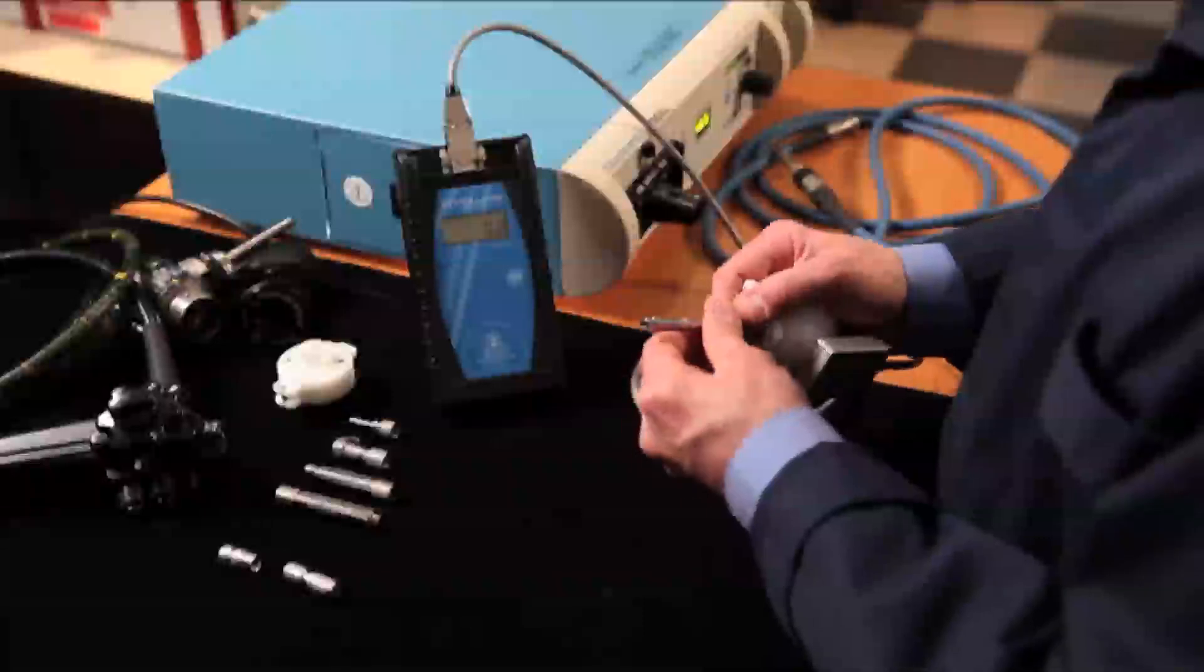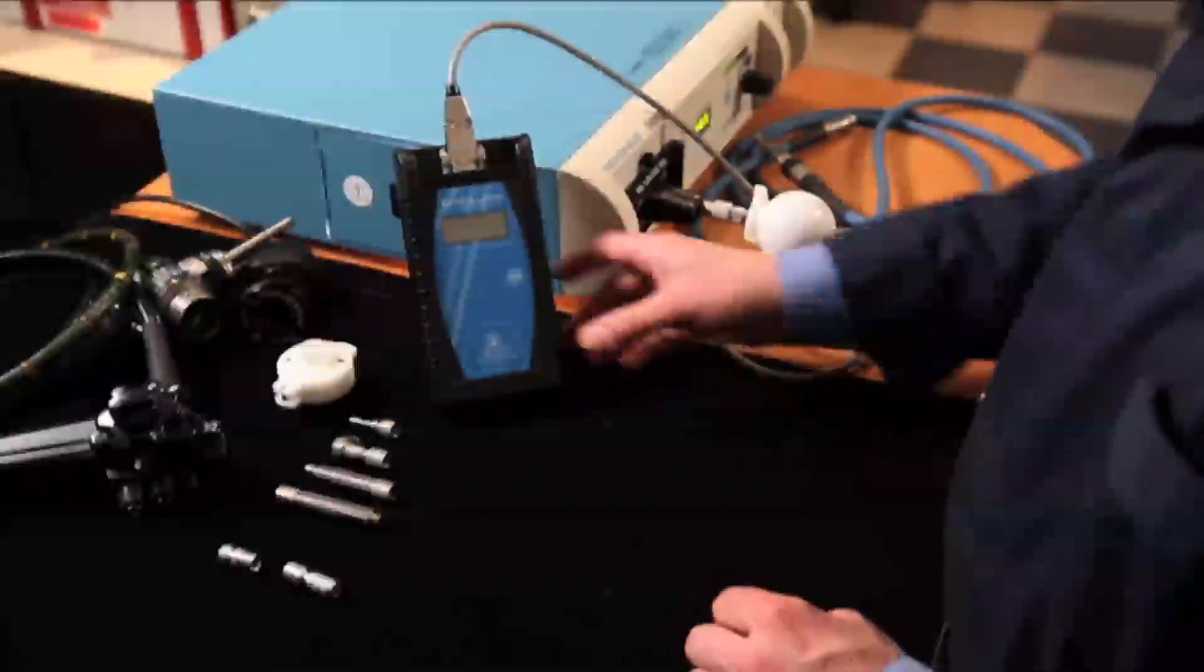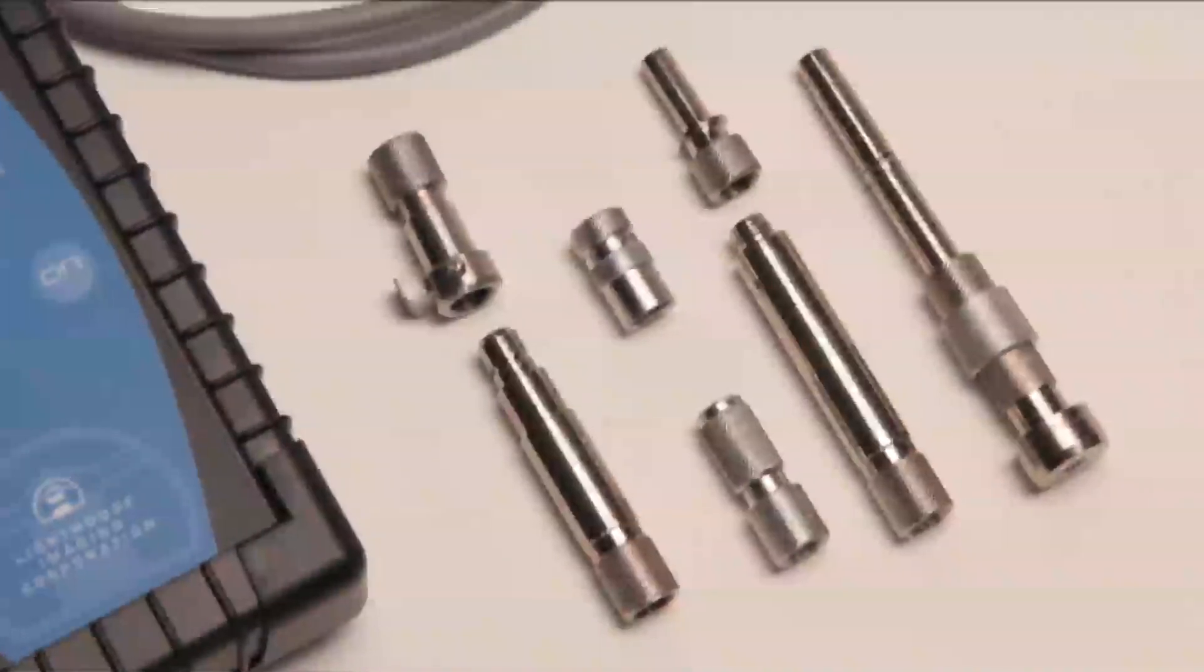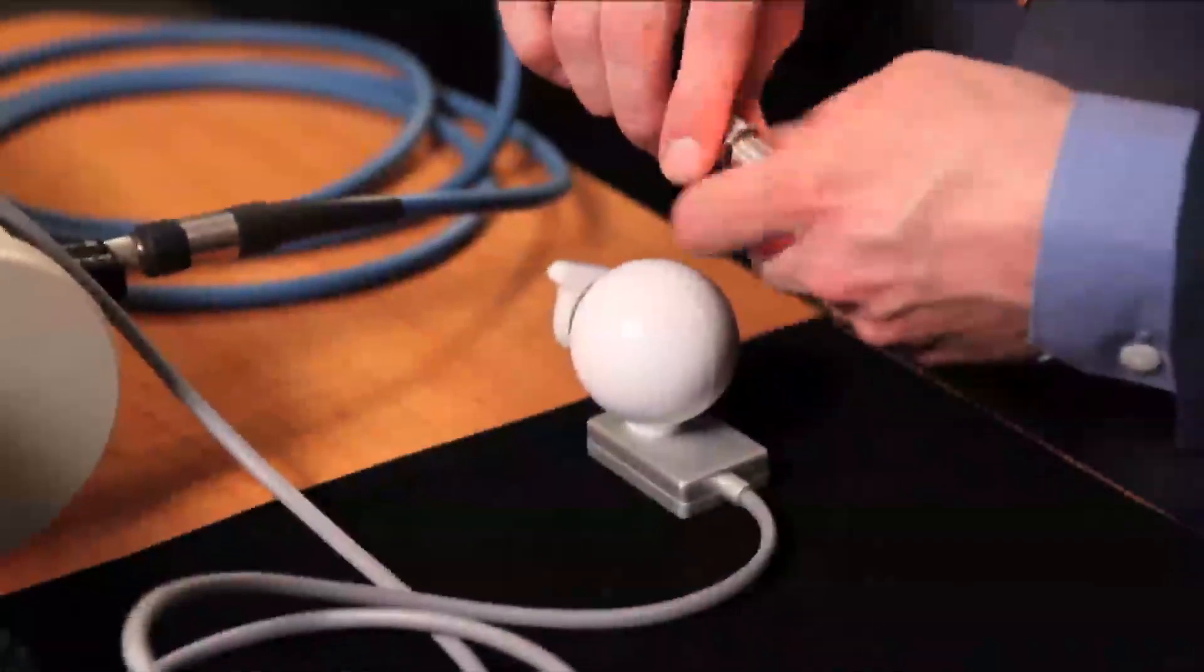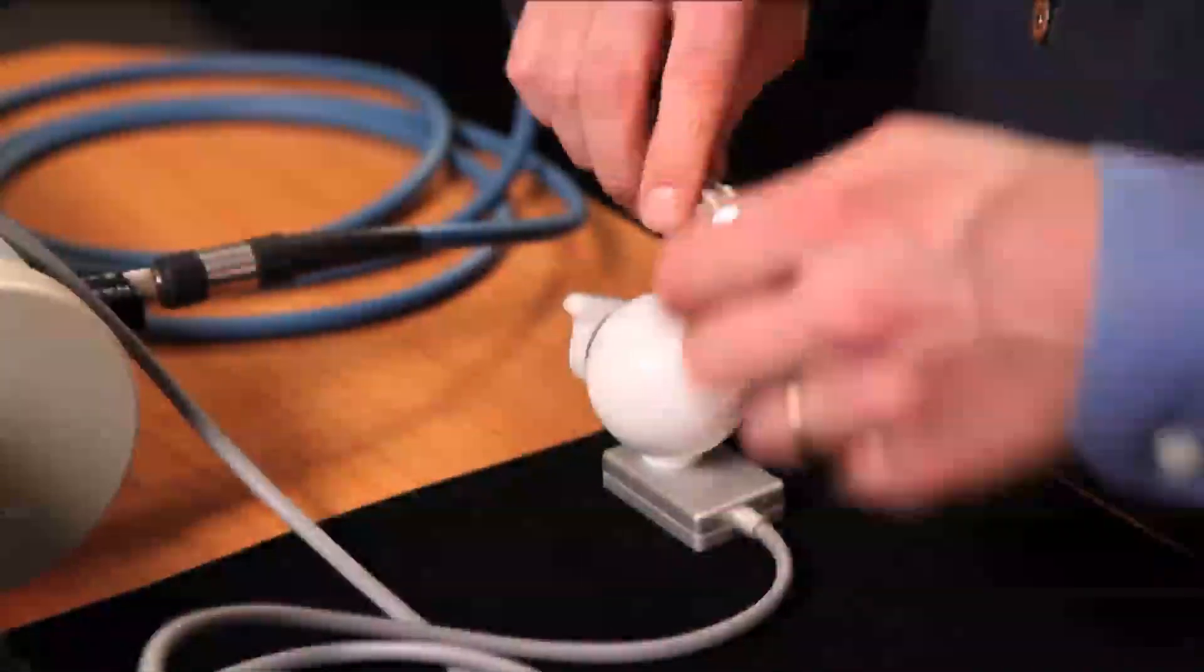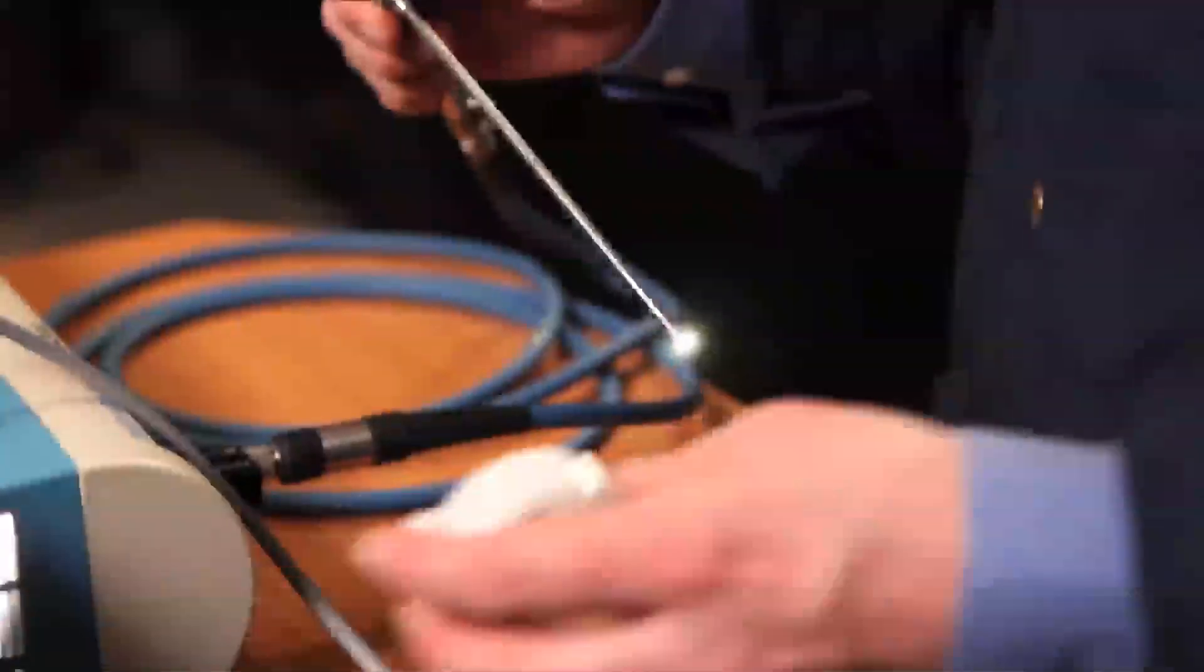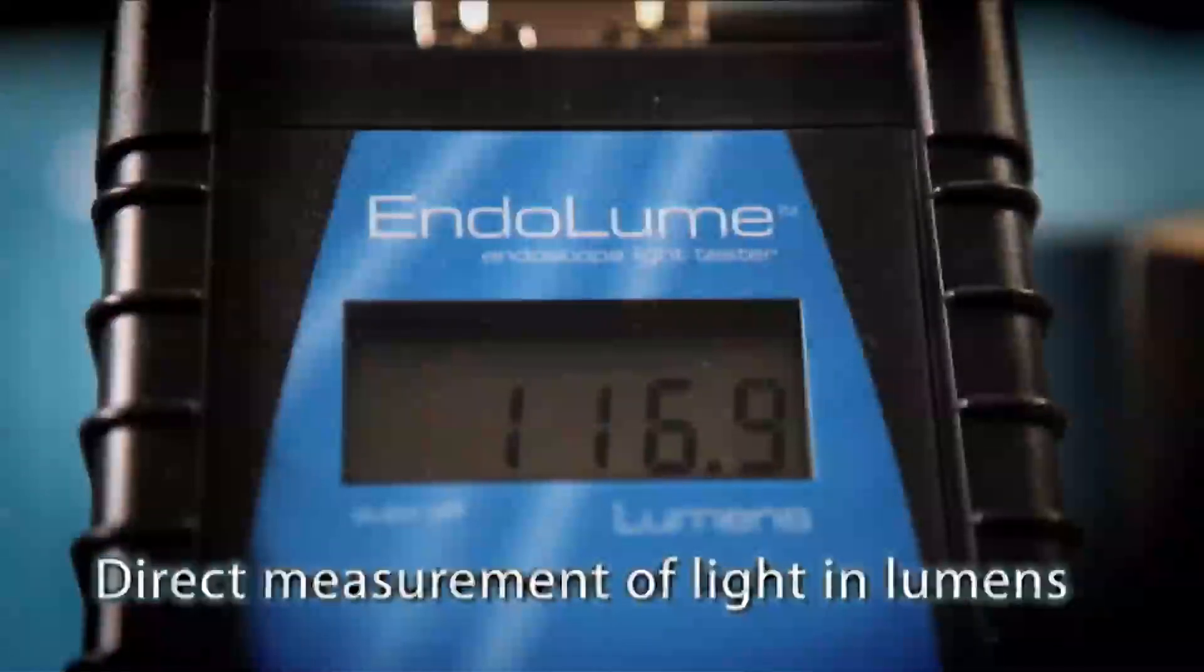All types of endoscopes, both rigid and flexible, can be tested with the Endolume. Included adapters attach to the Endolume and plug into the light source. The Endolume's patent-pending optical bridge uniquely makes accurate measurements inside the light source at the exact position of the light cable tip. The Endolume reads in lumens, a direct measurement of the radiant intensity as perceived by the human eye.